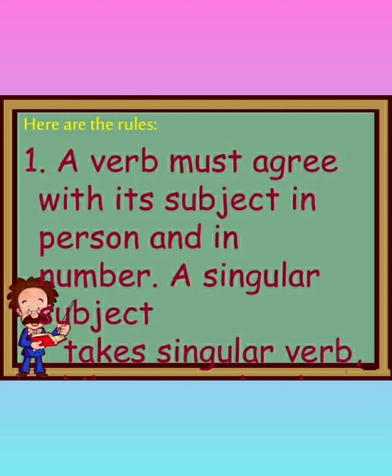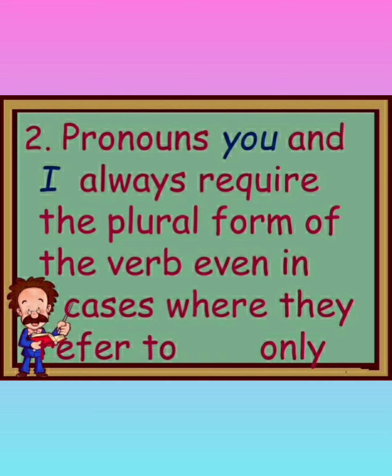A singular subject always takes a singular verb, as we have already seen in previous examples. If your subject is singular, your verb will basically be singular. But pronouns 'you' and 'I' always require the plural form of the verb, even in cases where they refer to only one person. In the previous slides I have shown that except 'you' and 'I,' so what does that mean? Whenever you are going to write the verb, for pronouns 'you' and 'I' you have to be careful.